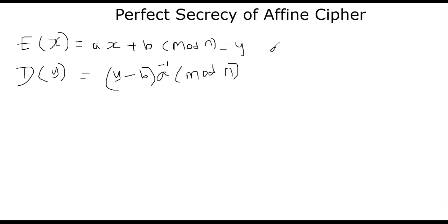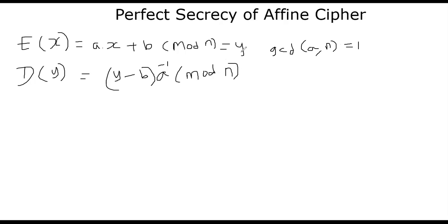You have to assume that GCD of a and n is 1, otherwise affine cipher is not a cipher at all. a and b are private keys — only the sender and the receiver would know. x is one particular message; x can be any number between 0 and n, and y will also be a number between 0 and n (not including n). That's the definition of affine cipher.